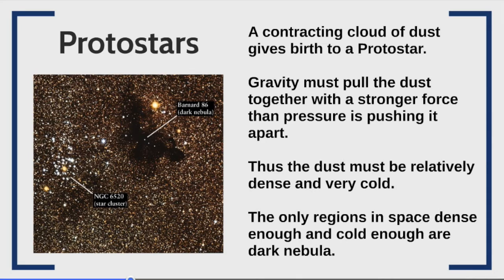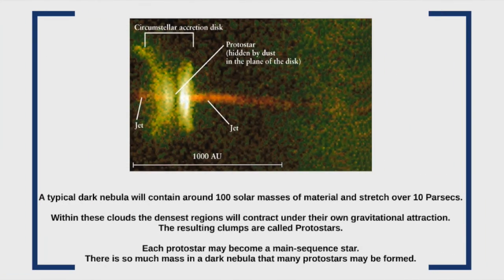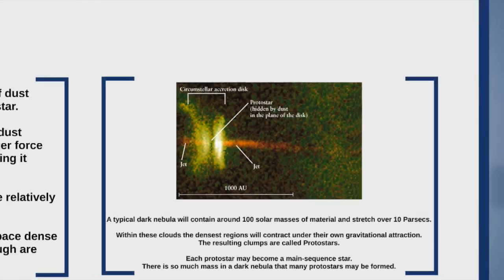Once the cloud is compressed enough that it starts to retain thermal energy and begins to shine, we have what we call a protostar, sometimes called a pre-main sequence star. A typical dark nebula may contain around a hundred solar masses of material and may stretch over ten parsecs. The densest regions in the cloud contract under their own gravitational attraction, resulting in clumping within the large dust cloud. Each one of these clumps may go on to become a main sequence star — which is why you see so many stars clustered together in their formation and very few lone stars created on their own.